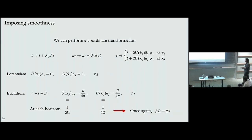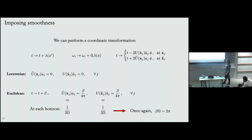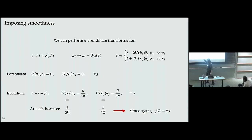In Euclidean signature, if my time is periodic, things are more subtle. Since φ is periodic, I can make this a consistent coordinate transformation if the relevant factors are such that when φ goes to φ + 2π, t goes to t + β. One can compute the exact angular velocity at each horizon to see how quickly the horizons rotate, and one finds that the angular velocity at each horizon equals 1/Ω. These solutions in fact only exist if β·Ω equals 2π, which is precisely the requirement that I'm computing an index.